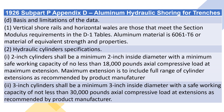D. Basis and Limitations of the Data. 1. Vertical shore rails and horizontal whales are those that meet the section modulus requirements in the D1 tables. Aluminum material is 6061-T6 or material of equivalent strength and properties.